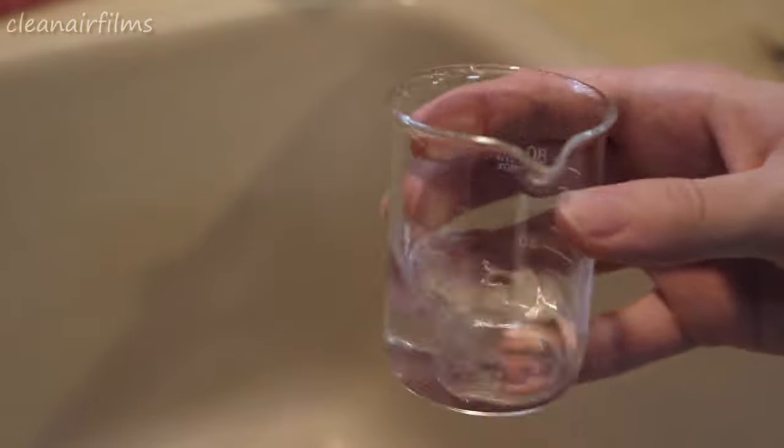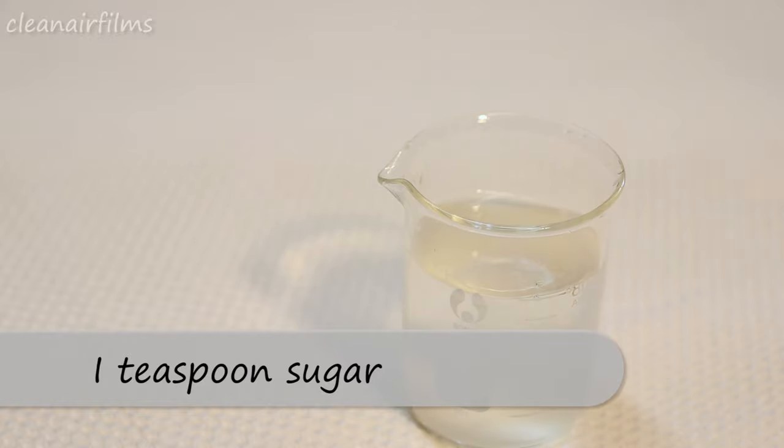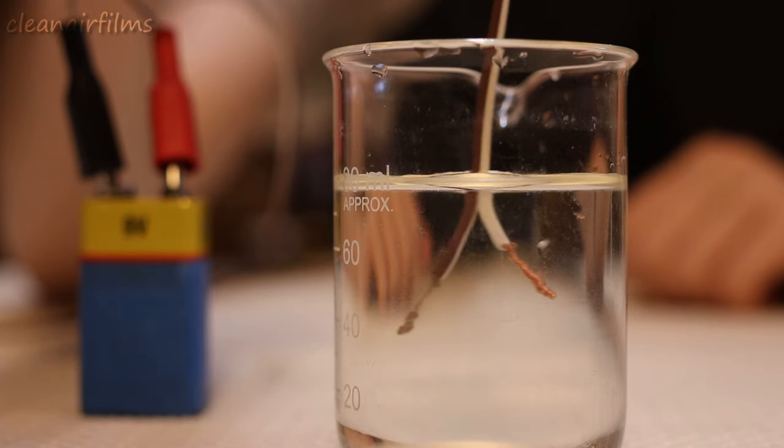Rinse out your beaker with distilled water again. This time, add one teaspoon of sugar. Mix it in. Now stick the prongs in it.